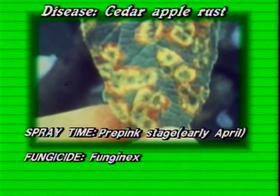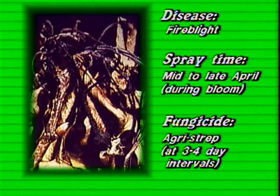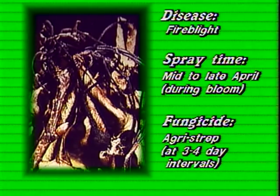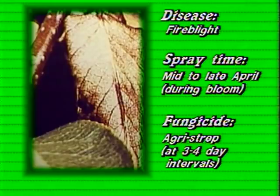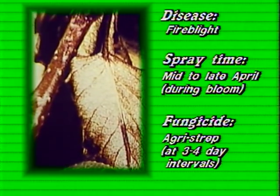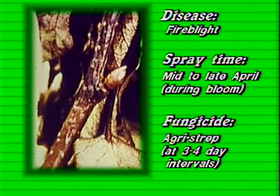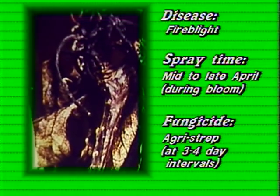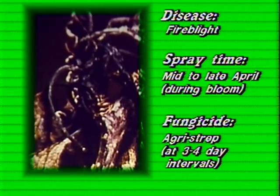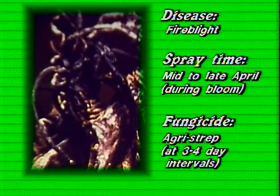During full bloom, we have a bacterial disease called fire blight. It's very aptly named because it looks like the ends of the branches have been scorched. This is often spread during the blooming period. What's commonly used is an antibiotic called streptomycin — there are various formulations of that. Normally they're applied every three or four days during the blooming period. But as with any pesticide, you would certainly want to read and follow label directions.